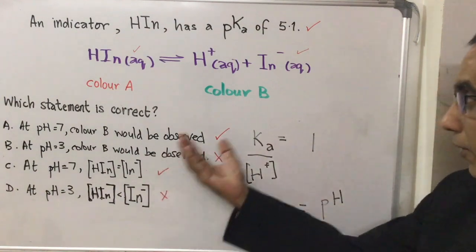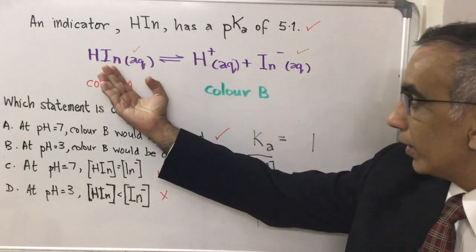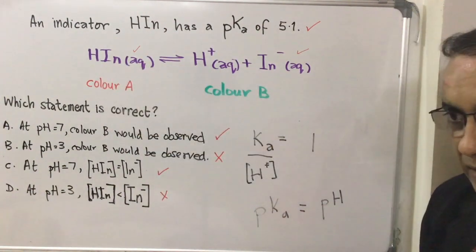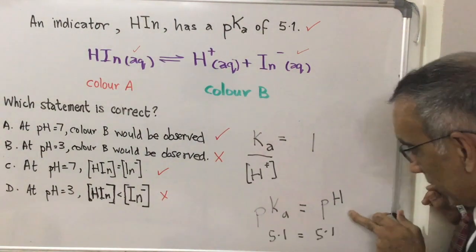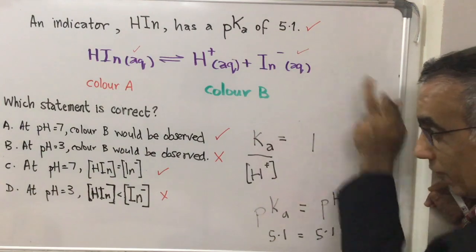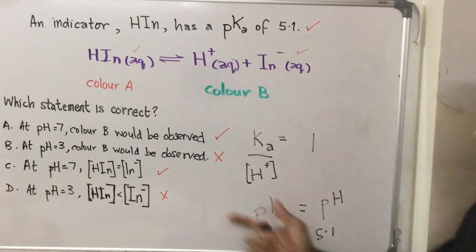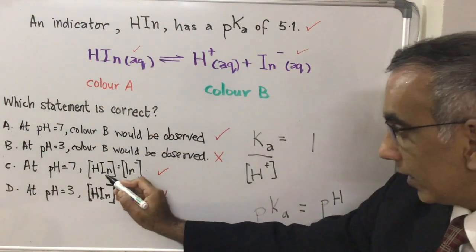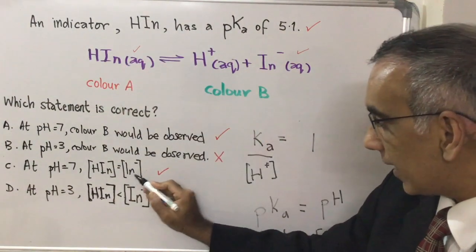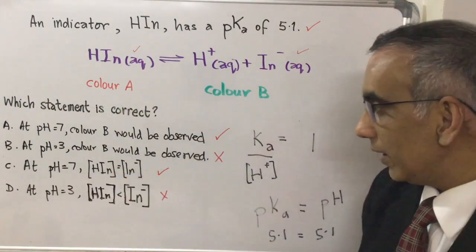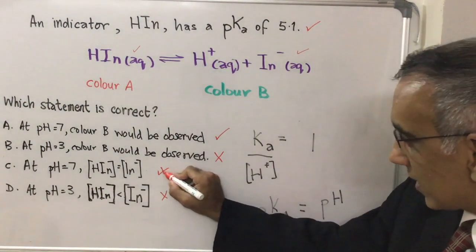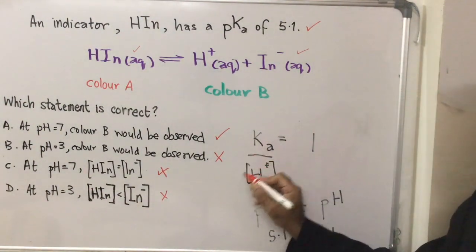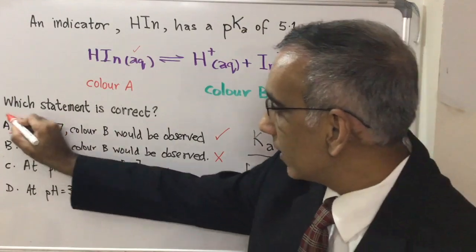So halfway through the color change process pKa is equal to pH means that we're going to have to have a pH of 5.1 to have that halfway point where HIN equals IN-. So it won't be pH 7. With that reasoning we can eliminate C and confirm that the answer for this question is A.